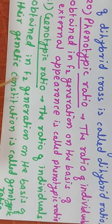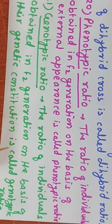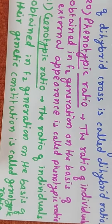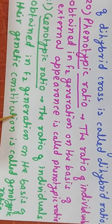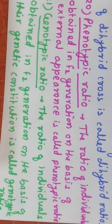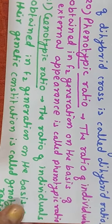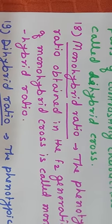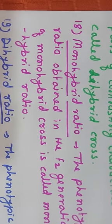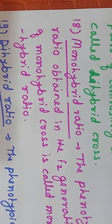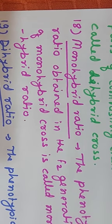The ratio of individuals obtained in the F2 generation on the basis of their genetic constitution is called the genotypic ratio. For example, the monohybrid genotypic ratio is 1:2:1 — one pure dominant, two hybrid dominant, and one pure recessive. So we have covered monohybrid cross, dihybrid cross, monohybrid ratio, dihybrid ratio, phenotypic ratio, and genotypic ratio.